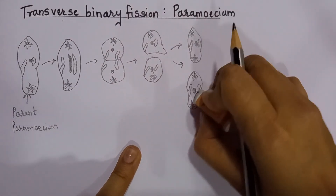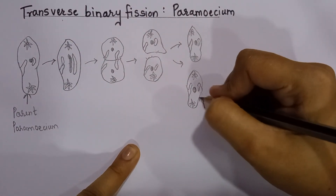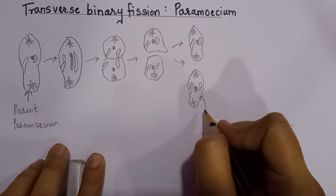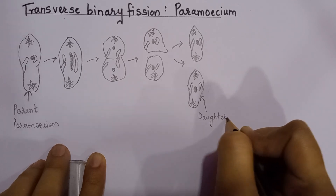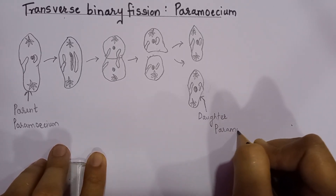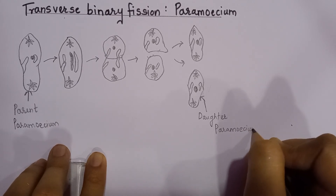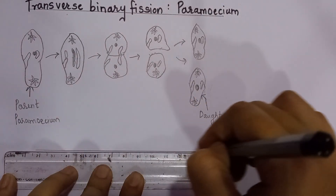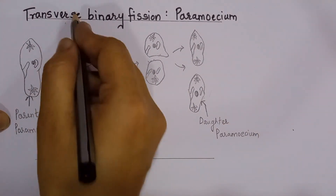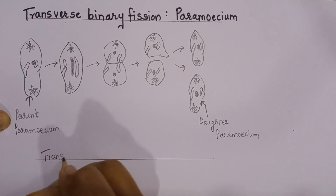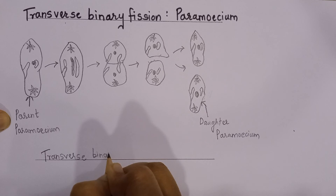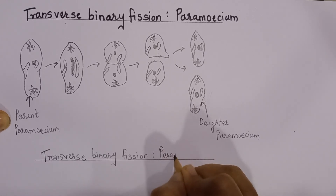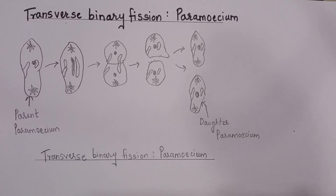That arrow didn't come out right. We can label either one as daughter Paramecium. And as I mentioned in the previous diagrams, label the diagram at the bottom as well — we write 'transverse binary fission in Paramecium.'